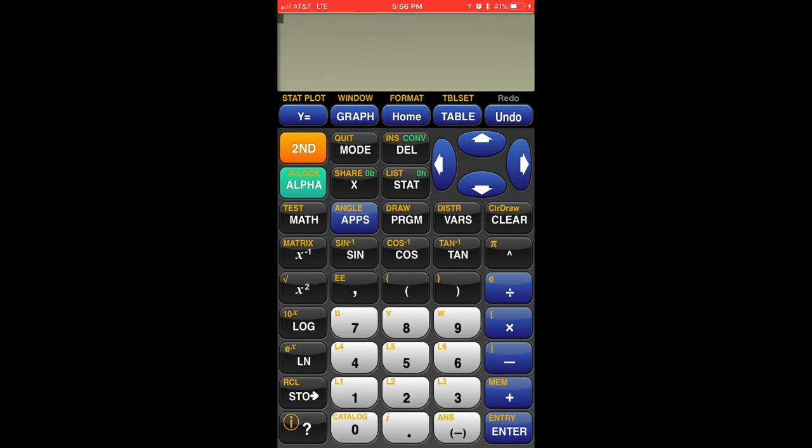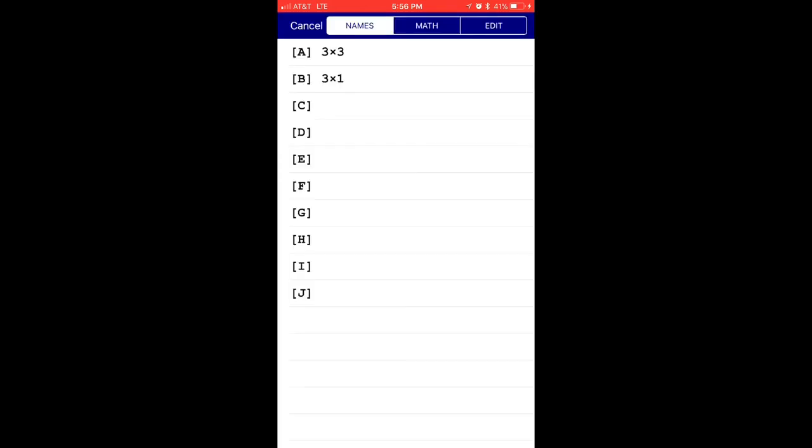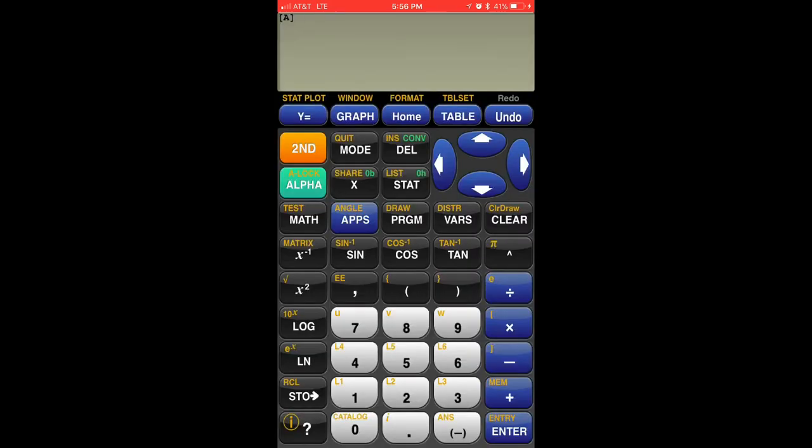So once we've created both of those columns, what we have to do is we have to press 2nd matrix, choose column A, and then press that same button but without the second so that we get an inverse. Then I'm going to press 2nd matrix again and choose column B and press Enter. And our final answer is x equals 0, y equals 6, and z equals 3.